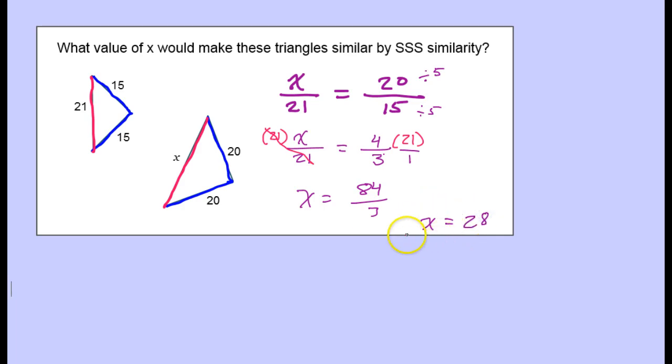So that is how you find the value of x that would make triangles similar by side, side, side similarity.